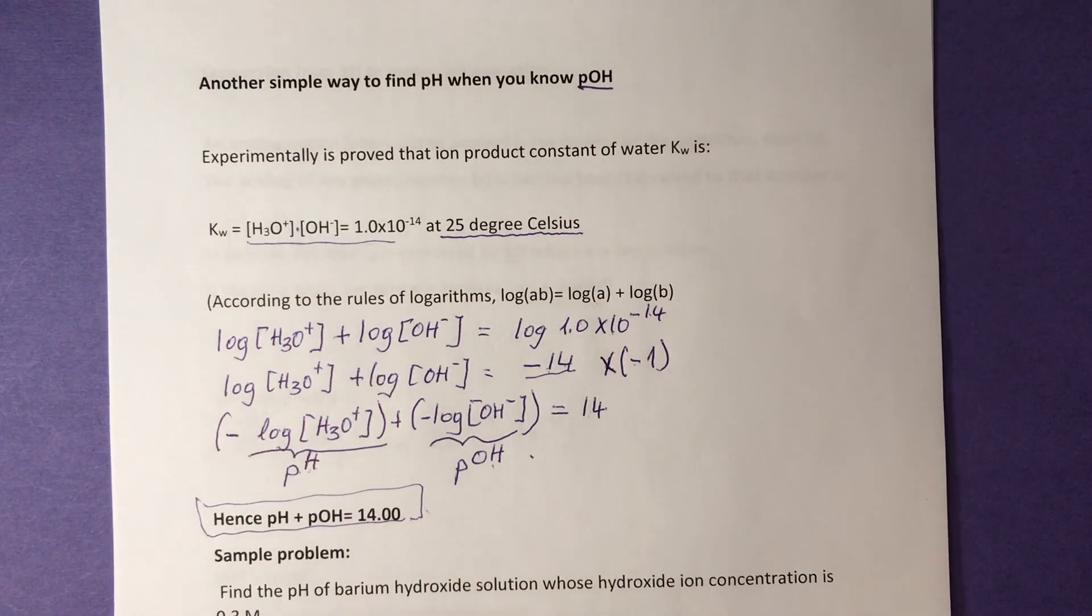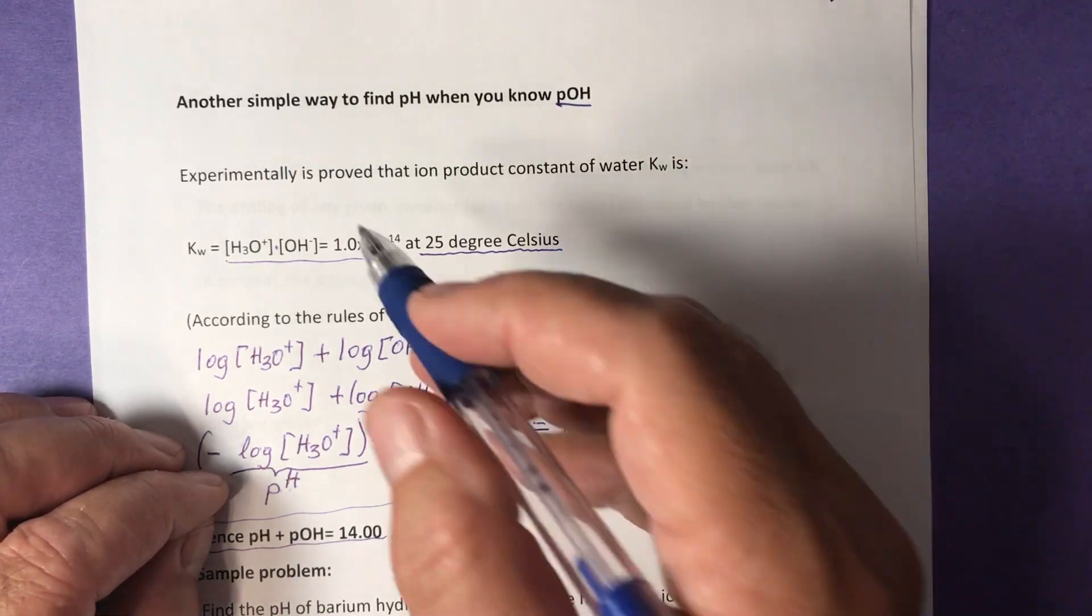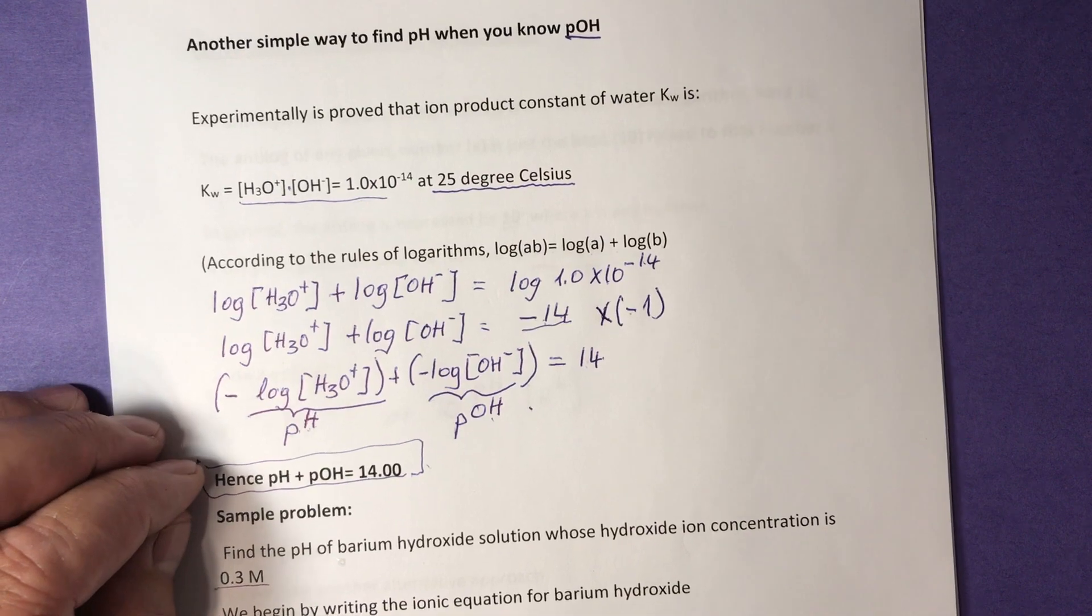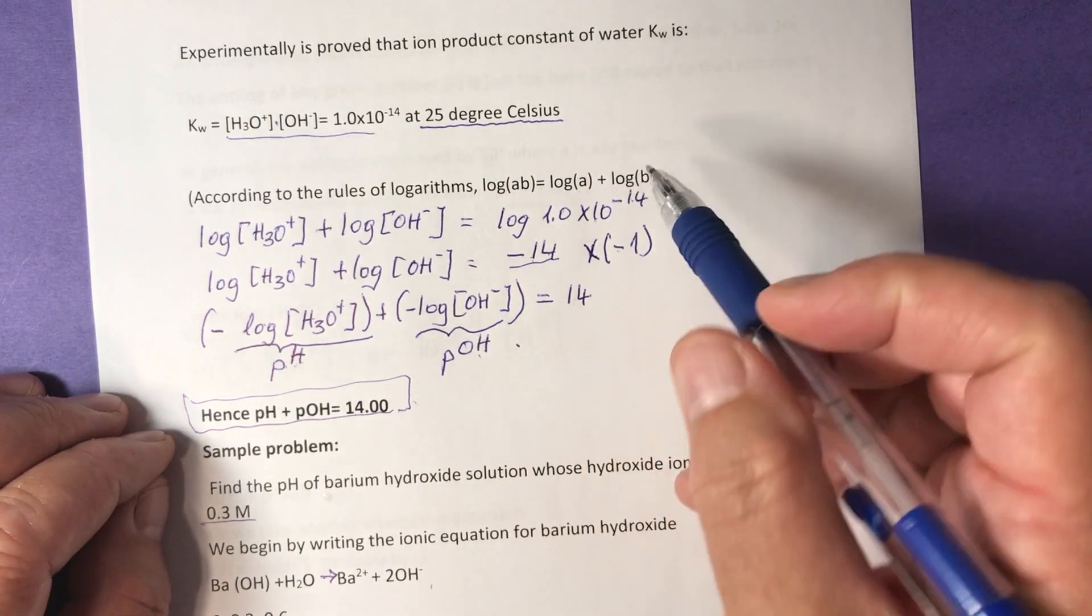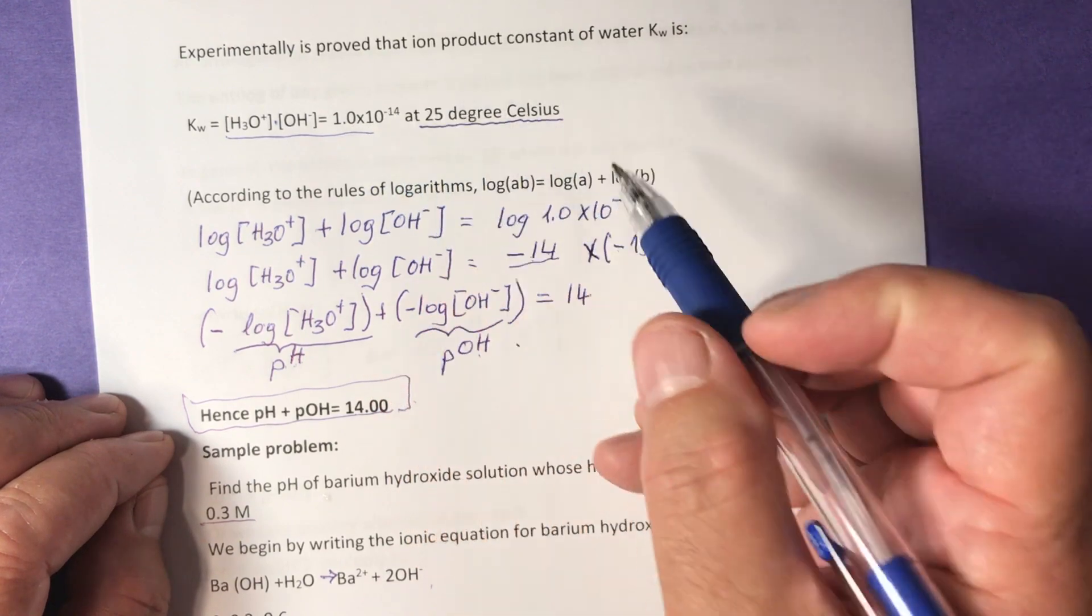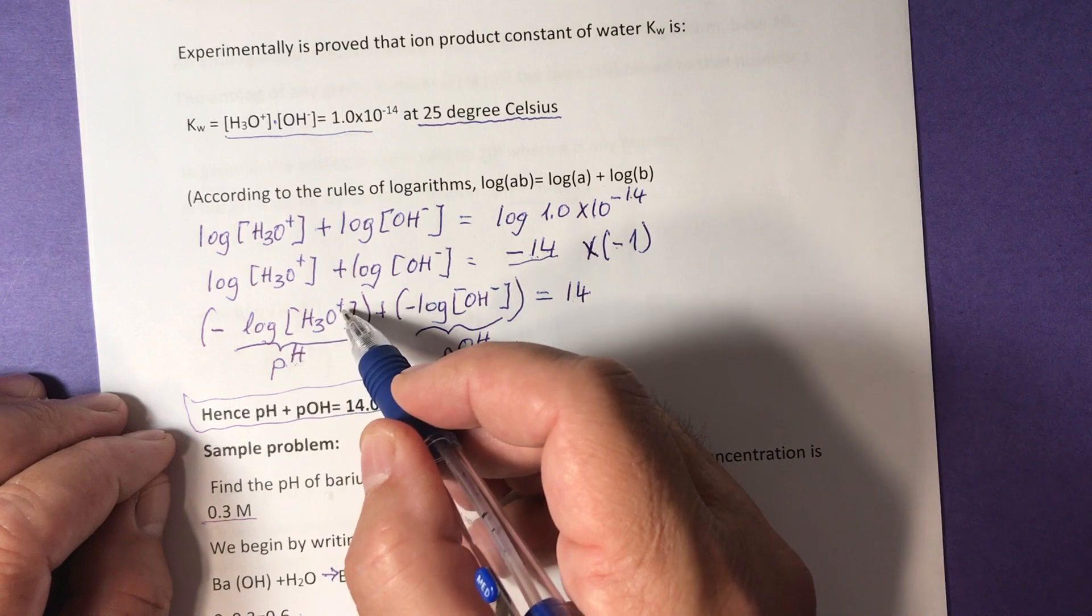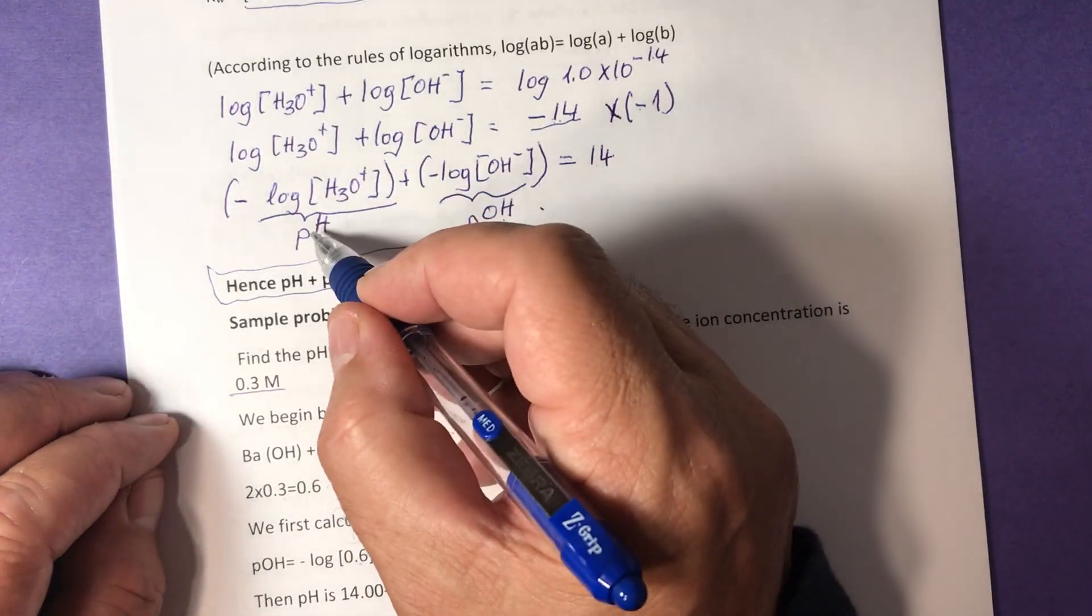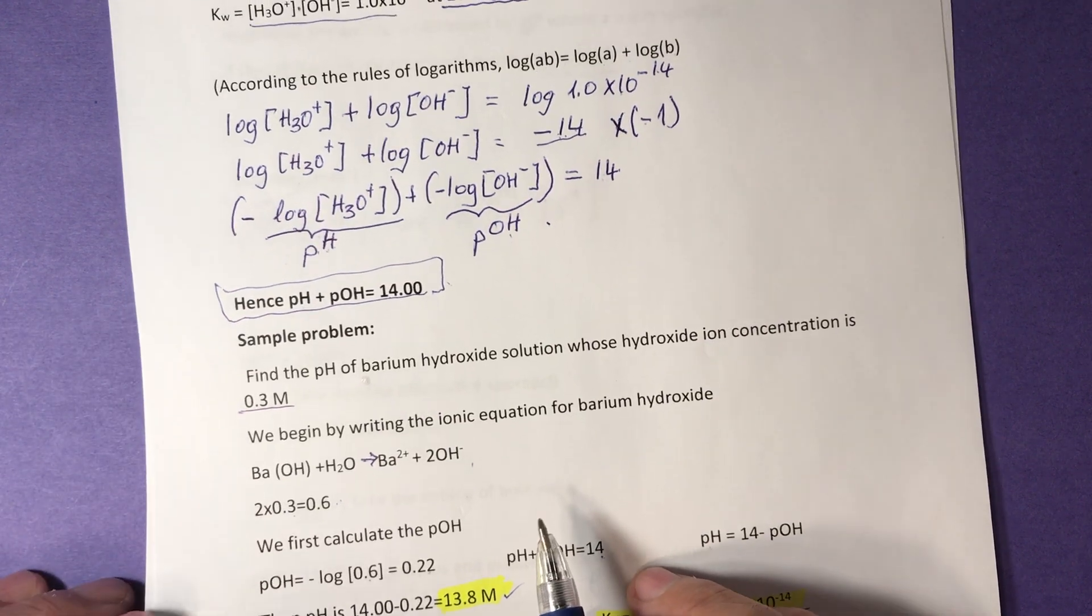Another simple way to find the pH when you know the pOH. Experimentally it is proved that the ion product constant of water, Kw, is 1.0 times 10 to negative 14 at 25 degrees Celsius. This is important because this is a temperature-dependent value. According to the rules of logarithms, log of AB is log of A plus log of B. Find the logs of both sides here, and we get the log of 1.0 times 10 to negative 14 is negative 14. Multiply by minus 1, and we get negative log of H3O+ minus log of OH- equals 14. This gives you pH, and this one here gives you pOH, so pH plus pOH equals 14. This is another important formula we are using to solve problems in this video.